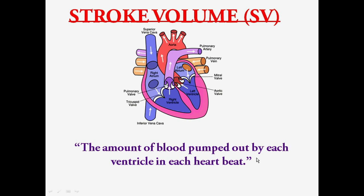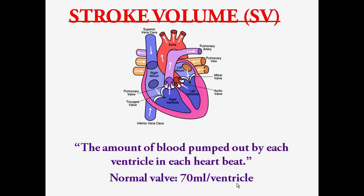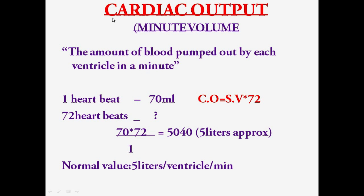Stroke volume is defined as the amount of blood pumped out by each ventricle in each heartbeat. One heartbeat is composed of one systole and one diastole, and the amount of blood ejected from each ventricle during that beat is the stroke volume. When you hear the word 'stroke volume,' stroke means to strike — it is the volume ejected during one heartbeat. The normal value of stroke volume is 70 ml per ventricle — 70 ml pumped into the pulmonary artery from the right ventricle and 70 ml pumped into the aorta from the left ventricle.